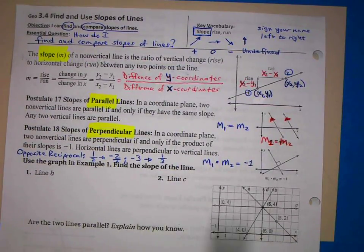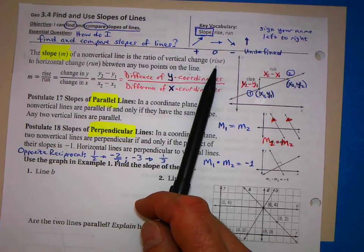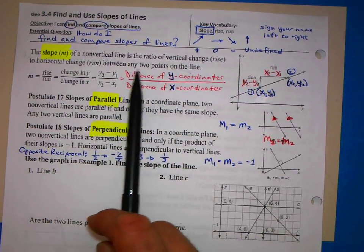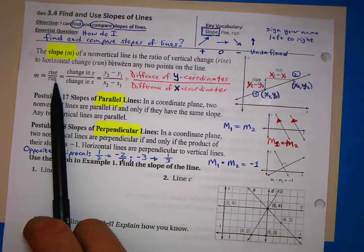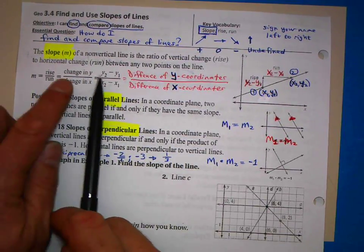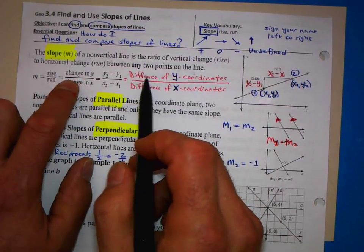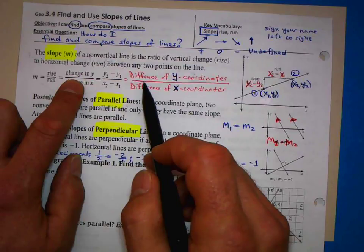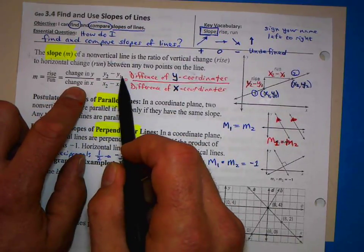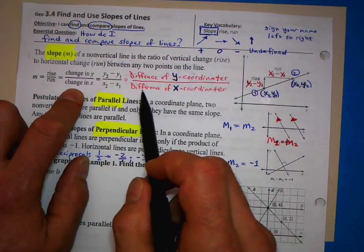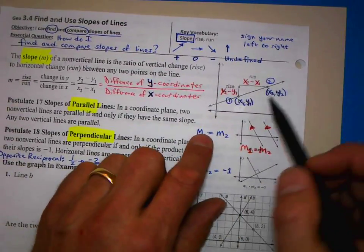The slope of a non-vertical line is the ratio of the vertical change — what we call the rise — to the horizontal change, which we call the run, between any two points on the line. That gives us rise over run, or the change in Y over the change in X: Y2 minus Y1 over X2 minus X1.